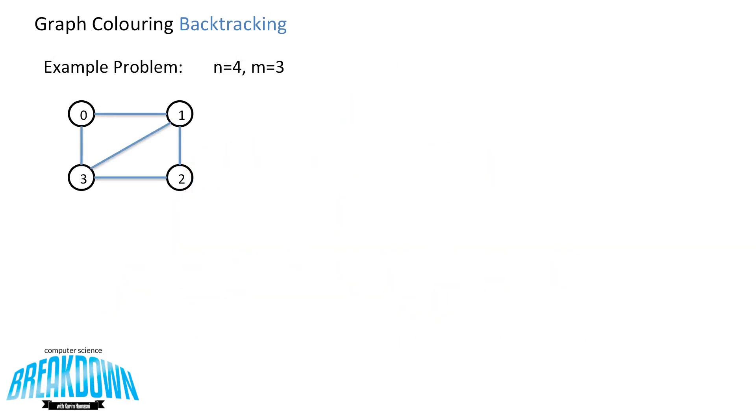So now let's walk through an example problem and examine some code. We have this four node graph here and they are connected to each other as follows. So n is equal to 4, m is equal to 3.